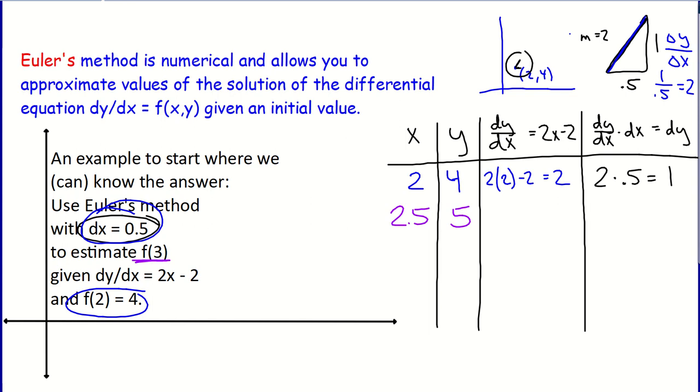dy/dx is 2x minus 2. Well, now the x coordinate has changed because I've moved forward half a unit. So this would be 2 times 2.5 minus 2, which is the slope here. 5 minus 2 is 3. So I'd have a slope of 3, and I'm going to follow that slope for a half unit change in x. Similarly, if I take the slope and multiply it by the change in x, that gives me the change in y, which in this case would be 1.5 units. So that means with the x value of 3, I would now have a y value of 6.5 because I was at a y value of 5, and I'm changing y by a positive 1.5 units. That means I can estimate that f(3) is about 6.5.